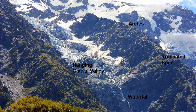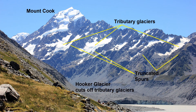The valley sides may also have truncated spurs, which are the ends of sloping ridges that have been cut off, or truncated, by the valley glacier, which flows straighter than a river would. You can see these features in this diagram.